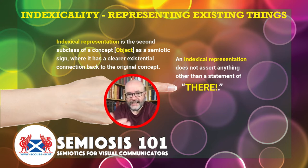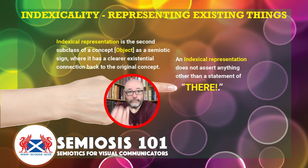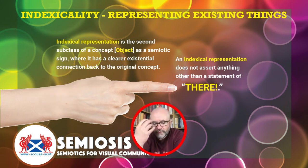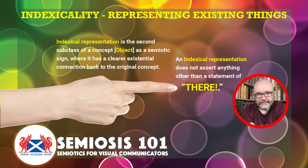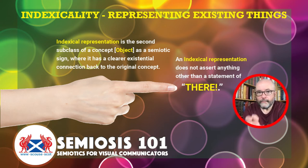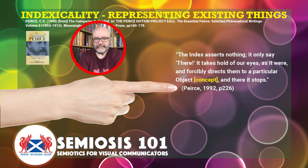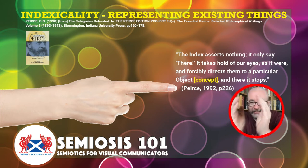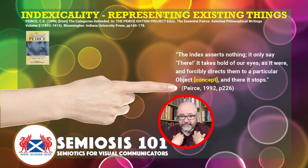The concept that we attach to visually communicate from our brief may connect to something that is in existence. This is where the actual idea and knowledge of semiosis will change how you design forever — once you understand this and are more consciously aware of the existence and the existential connections, so that you can craft them in much stronger ways. The index as a representation asserts nothing; it can only say 'there.' As Peirce says, the indexical representation takes hold of our eyes as it were and forcibly directs them to a particular object or concept — and there, the indexical representation stops. It doesn't go any further.